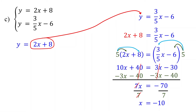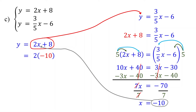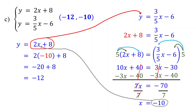Next, plug in this value of x into the first equation to find the value of y. 2 times negative 10 is negative 20. Negative 20 plus 8 is equal to negative 12. Therefore, the solution to this example is negative 12 comma negative 10.